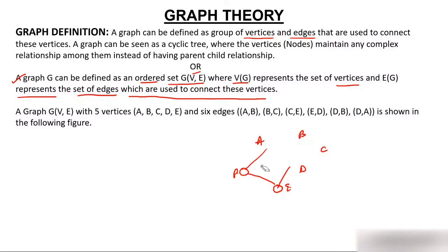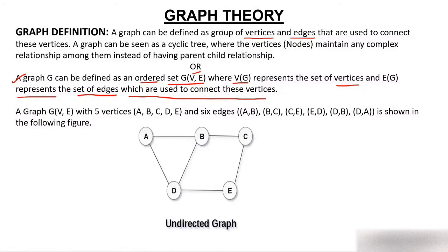In this example, you can see a graph G with 5 vertices and 6 edges. This is an undirected graph, meaning there is no direction assigned to its edges.